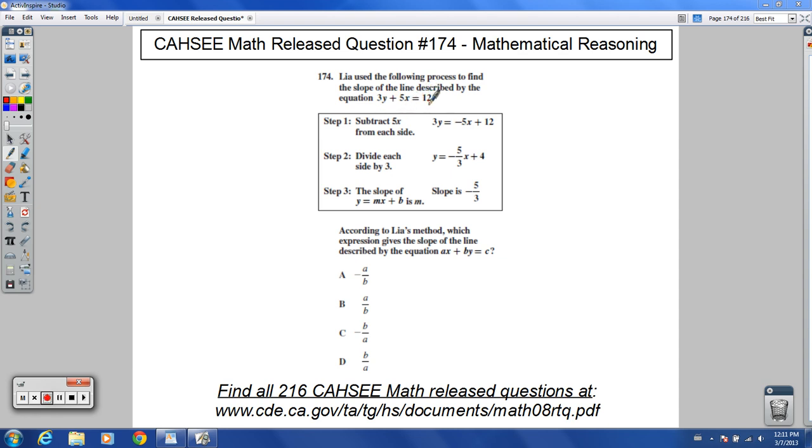So notice not in standard form right there. Standard form, we usually have the x come first. So we'll keep that in mind as we move on with this question. Step one, subtract 5x from each side. So we did that from here to here, we'd get that.